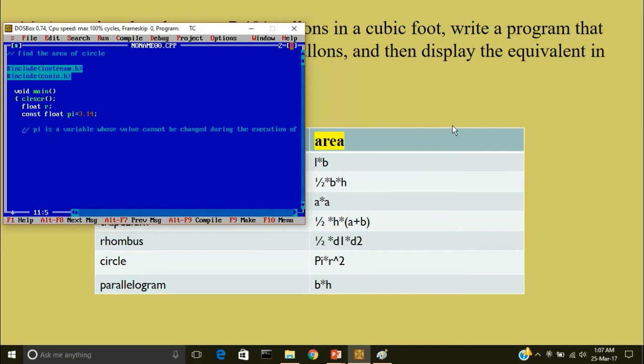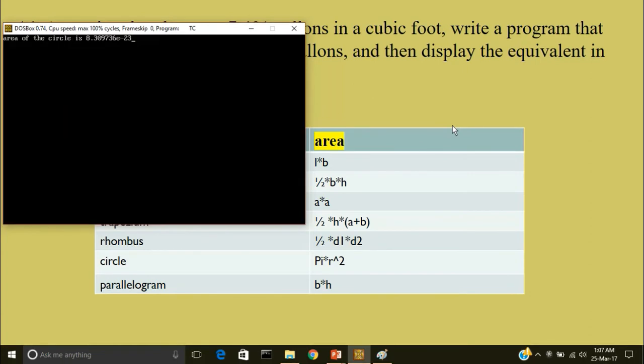Now we'll calculate the answer. I'll declare one more variable called answer. And I'll initialize it to 0. Now you can see answer is not a constant value. Its value can be changed during the execution of the program since it does not have a keyword constant. Now answer is equal to pi star r raised to the power 2 means you have to multiply r two times. Cout area of the circle is less than less than answer, followed by semicolon. Getch. Now close the program.